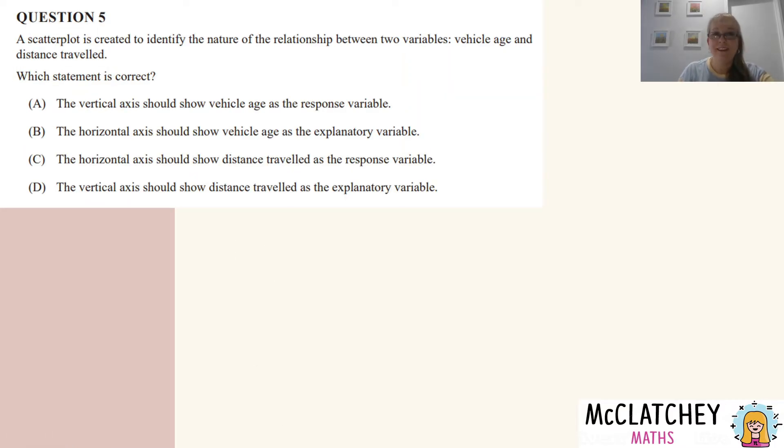Question five, we're powering through these. A scatterplot is created to identify the nature of the relationship between two variables, vehicle age and distance traveled. So we're looking at a car or a truck of some kind, and we're looking at two variables. We would typically plot on the x-axis the explanatory variable, and the clue there is the x in the word explanatory. And it has an impact of some kind on the y-axis or the response variable. So we need to have a think about vehicle age and distance traveled. What has the effect on the other variable?